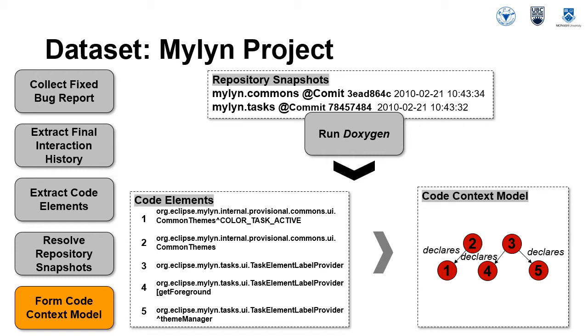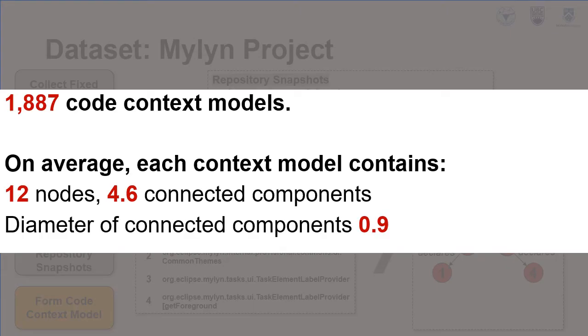We used Doxygen to identify structural relations between code elements. Specifically, we ran Doxygen for each associated repository snapshot. In this paper, we considered four structural relations: declares, calls, inherits, and implements.